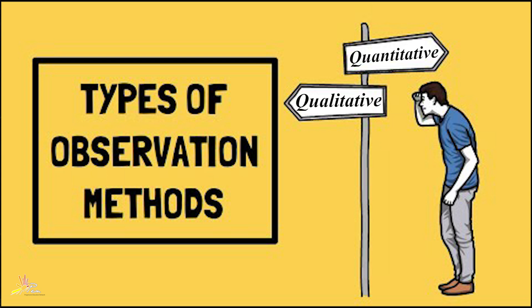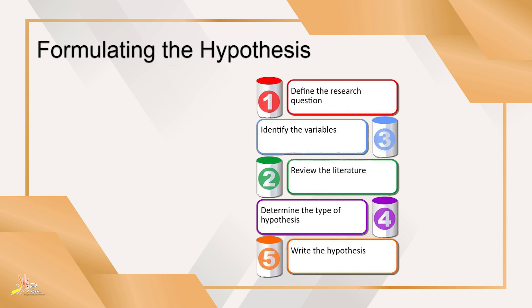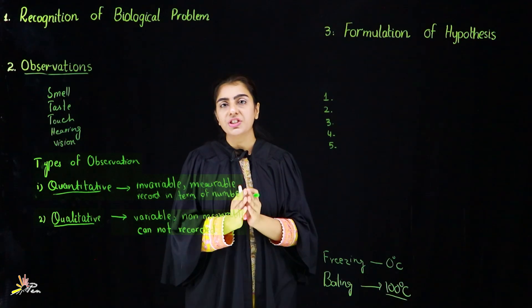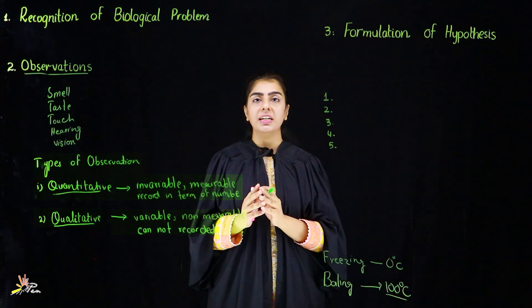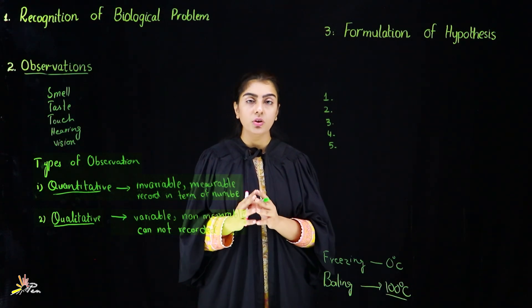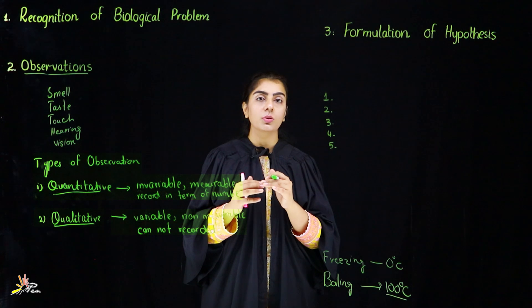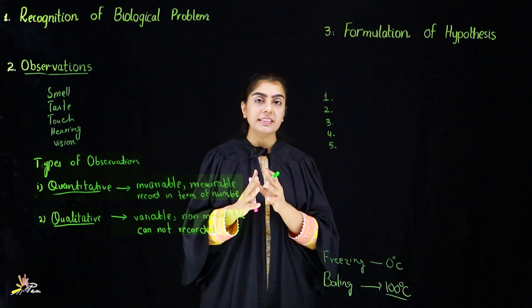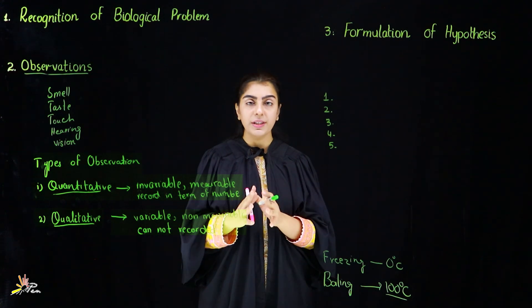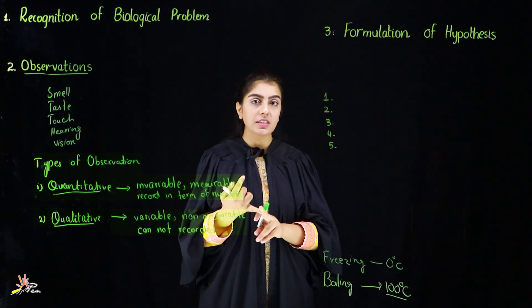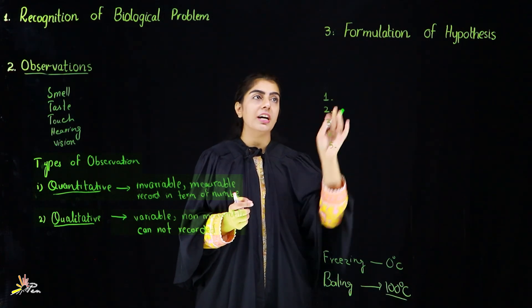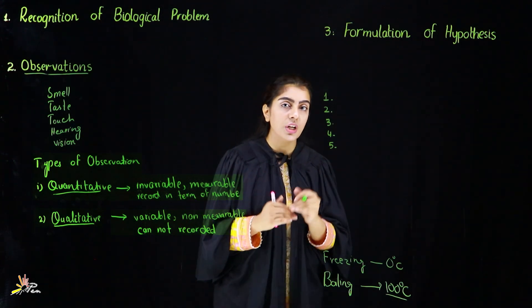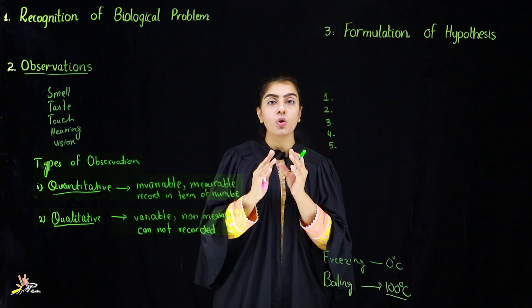Now we come to the third step which is formulation of hypothesis. After you have made your observations, the turn comes to form a hypothesis. You collect all your observations in the form of data and then you write a statement that must be falsifiable and testable — meaning there must be a certain way to prove your hypothesis wrong.